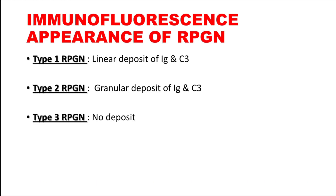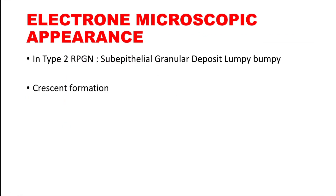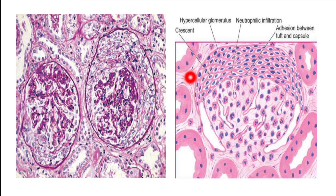If you have any doubt, you can ask in the comment section. Remember, RPGN is not a specific etiological condition — it is a group of manifestations representing a severe form of glomerular injury. Type 1 is anti-GBM antibody induced (Goodpasture syndrome), type 2 causes include post-infectious, lupus, HSP, and IgA nephropathy, and type 3 is pauci-immune seen in vasculitis with no immunoglobulin deposit. The characteristic feature is crescent formation with severe neutrophilic infiltrate, hypercellular glomerulus, leaked fibrin, and proliferated parietal epithelial cells. See you in the next video — take care and bye bye.